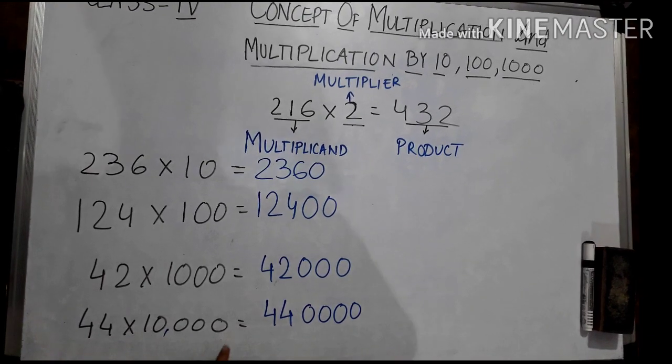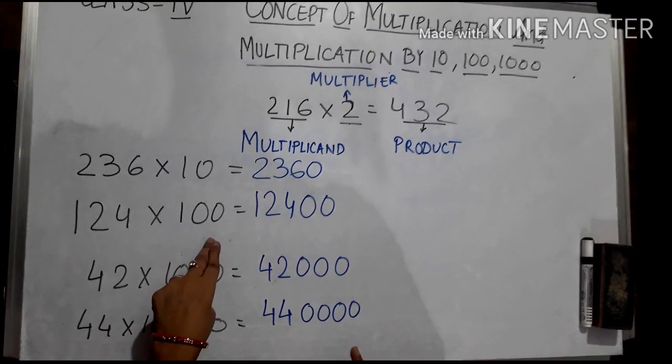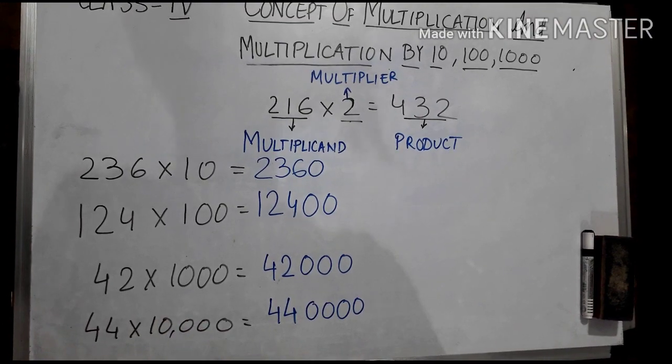So in this way you can multiply with tens, hundred, thousand or ten thousand. Thank you.